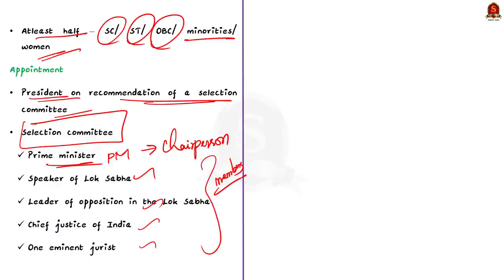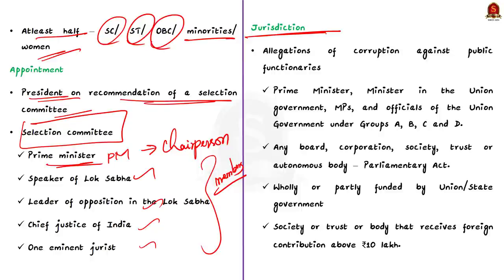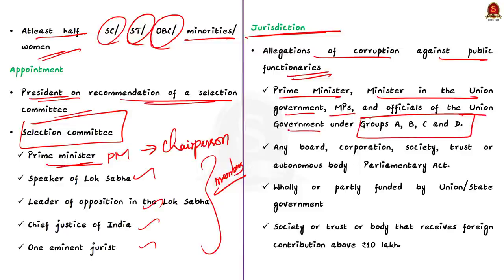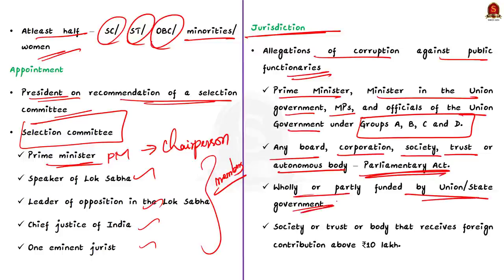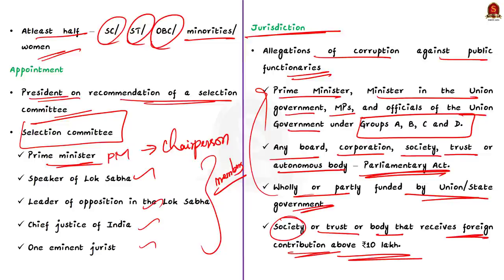The Lokpal has jurisdiction to inquire into allegations of corruption against public functionaries including the Prime Minister, ministers in the Union Government, MPs, and officials of the Union Government under Group A, B, C, and D. It also covers functionaries of any board, corporation, society, trust, or autonomous body established by an Act of Parliament or wholly or partly funded by the Union or State Government. It also covers any society, trust, or body that receives foreign contribution above ₹10 lakh.